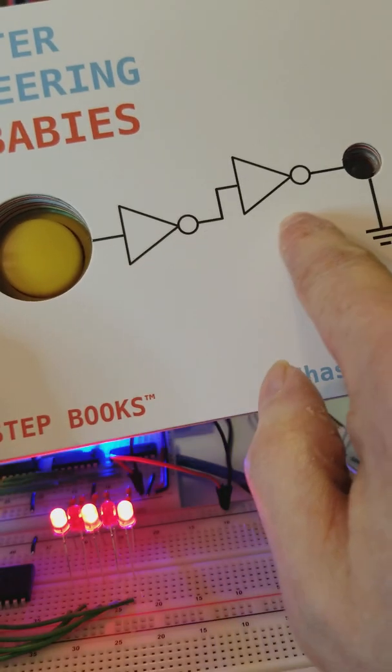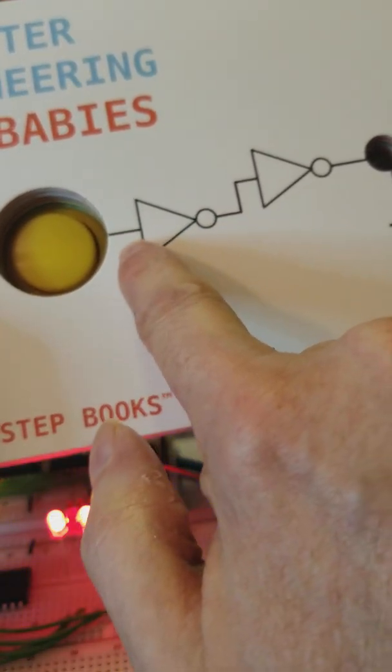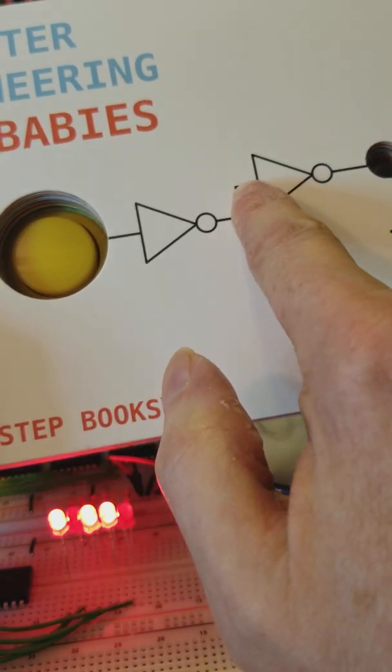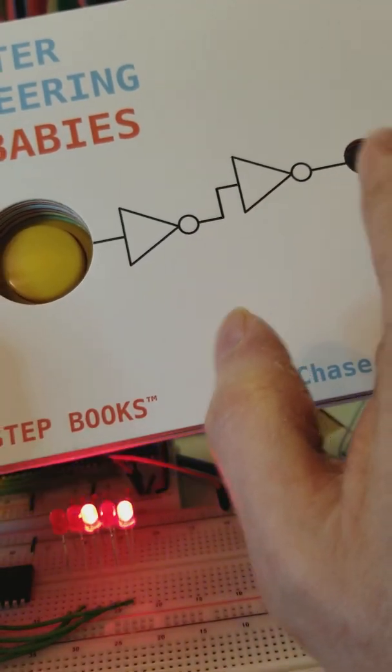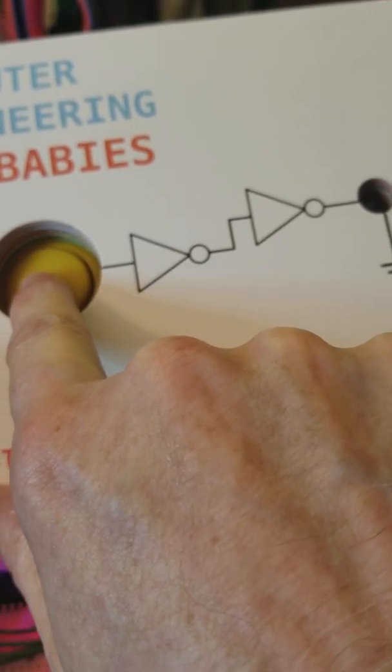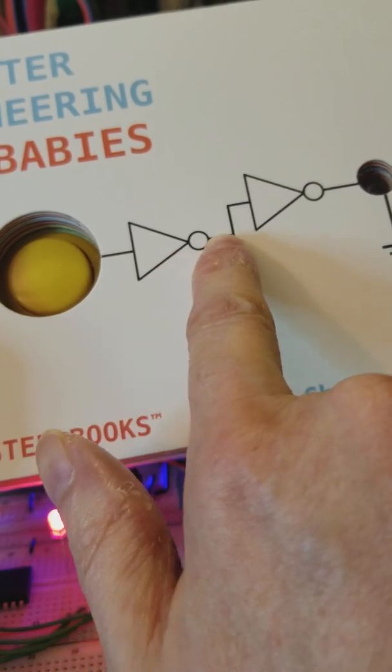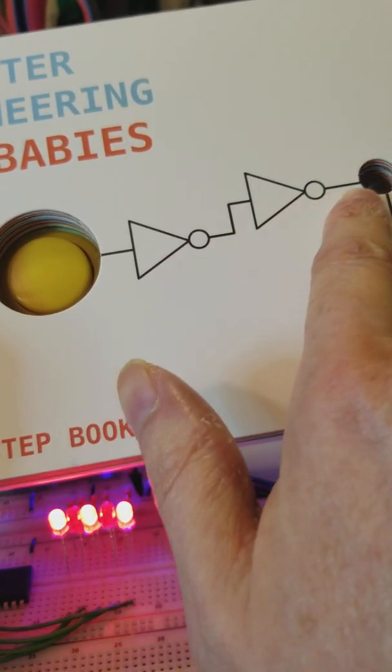These are two NOT gates. So there's no power to this, which means there is power to this one, which means there's not power to the light bulb. But if we press the button, then power comes to the first one which turns off the power to this one, which turns on the power to the light bulb.